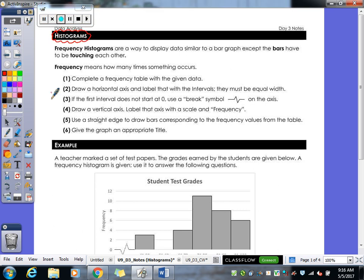Alright, so today we are dealing with histograms. Generally with your histogram you don't have to usually make one, they give you a picture of it and you have to be able to answer questions off of it. So our first kind is a frequency histogram which is a way to display data similar to a bar graph and the bars have to be touching one another. You cannot have spaces in between those otherwise it is no longer a histogram and it is now just a bar graph. So they have to be touching.